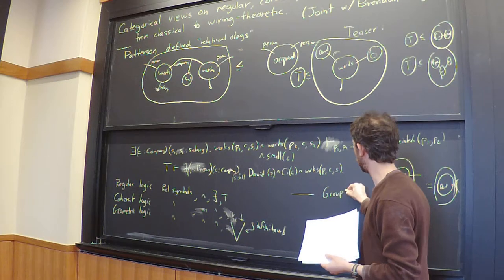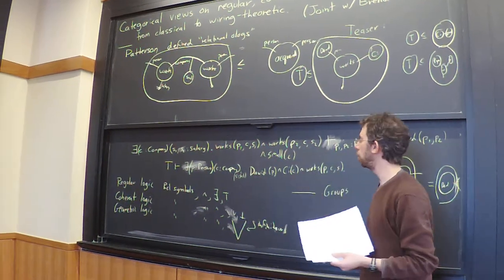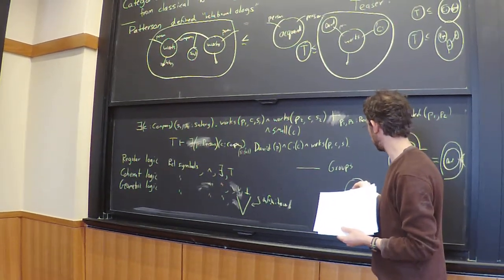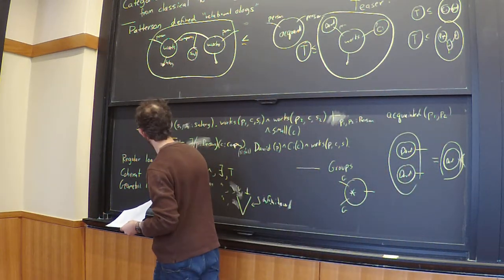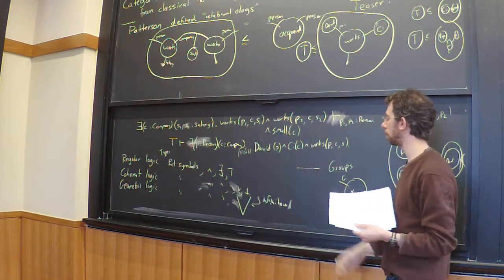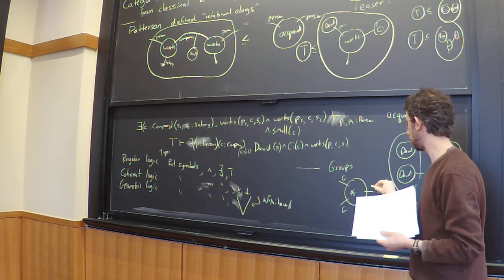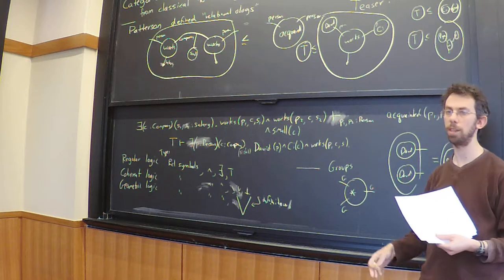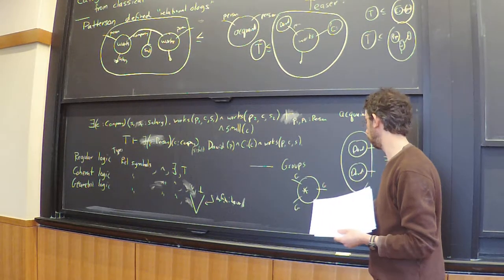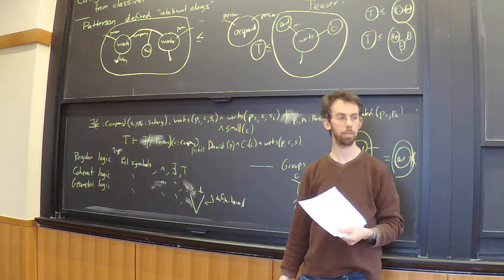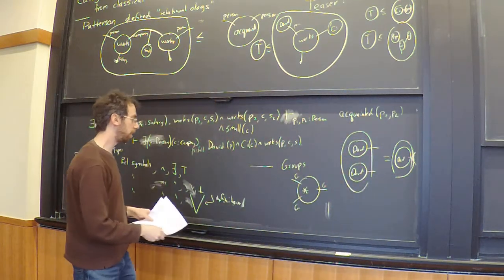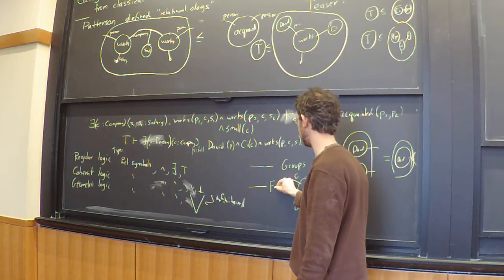The types of things you can say in regular logic: you can make theories like the theory of groups. What you would do is make a relation symbol called plus or times. You'd have one type—all these things have types—the types are like company, salary, person, and they're what's on the strings. So I have one type called group, one relation symbol called times, and various axioms to say there exists a unit, there exists inverses and stuff like that. For group theory you can do it all with and, exists, and true.